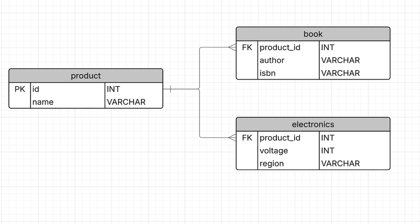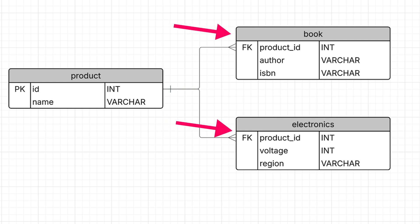The third option is using tables for each type of record. In this example, we have a main or base table for products that stores any common attributes for each type of record, such as the name. We then have separate tables for each type of record — for example, book products and electronic products. These have different attributes and are in different tables, with a foreign key back to the main product table. It's similar to the previous option, but a product would only have data in one of the subtype tables, whereas with the previous option the product would have data in all of the tables.